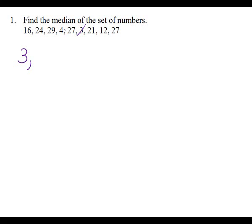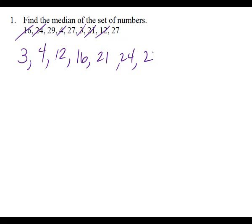What's my next number? Four. What's next? Twelve. What's next? Sixteen. What's next? Twenty-one. What's next? Twenty-four. Then what's next? Twenty-seven — there's two of those. And what's next? Twenty-nine.